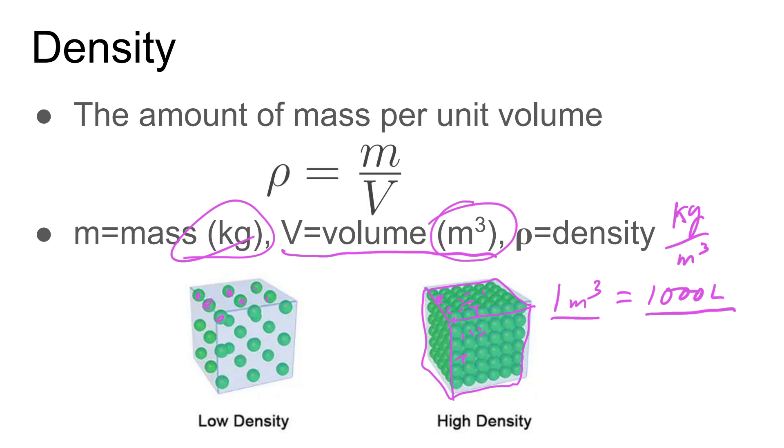Two other very common densities we'll be using will be the density of air. The density of air is going to be about 1.29 kilograms per meter cubed. And then the other one of course would be water. And water is nice: one thousand kilograms per meter cubed.